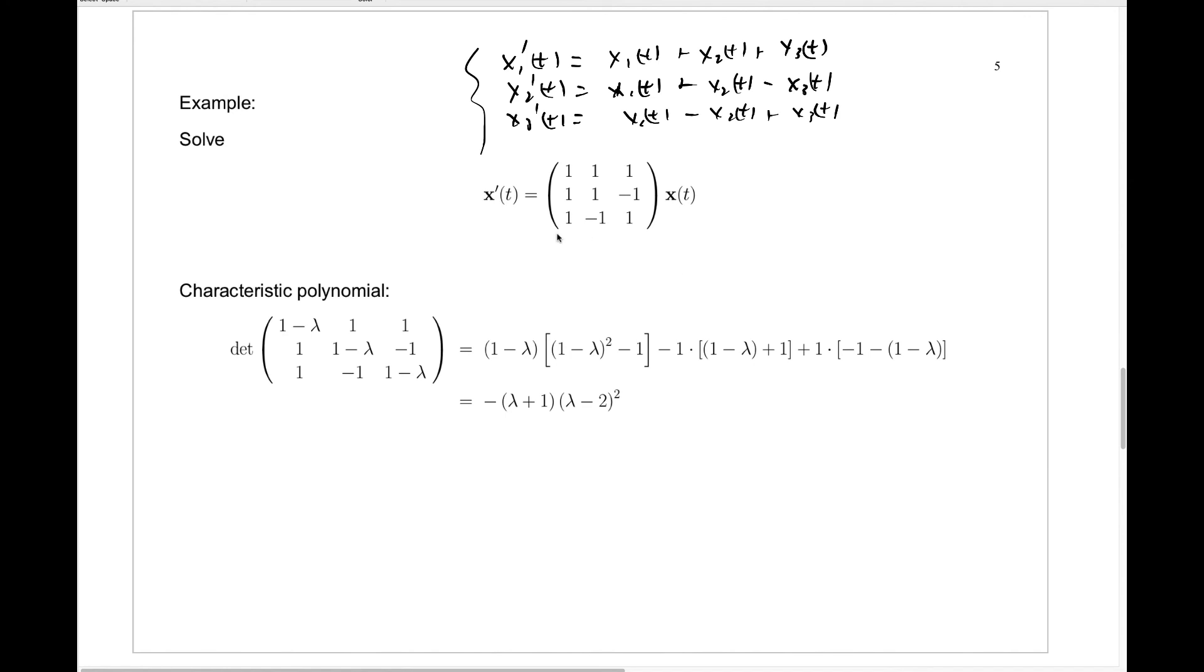We want to find the eigenvalues and eigenvectors for this matrix. We compute the characteristic polynomial which is the determinant of this three by three matrix. If you just expand on the first row you get this whole thing which is a big mess but it easily simplifies to a cubic polynomial which factors nicely as minus lambda plus 1 times lambda minus 2 squared.